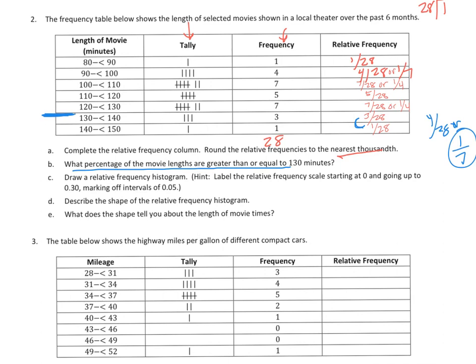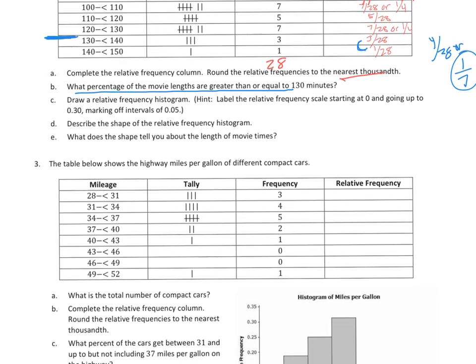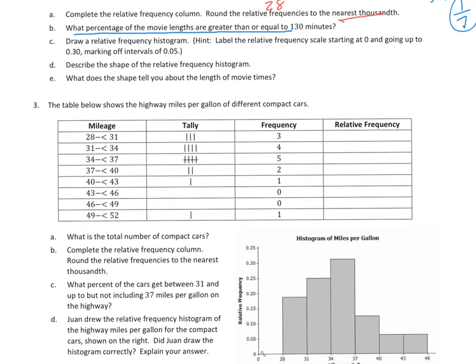C says draw a relative frequency histogram, and it says label the relative frequency scale starting at zero and going up to 30 hundredths, marking off intervals of five hundredths. That's going to help you out quite a bit. So at least they gave you a little bit of a scale going in there. I'm not going to draw the histogram because I want to kind of tackle some of these other problems.